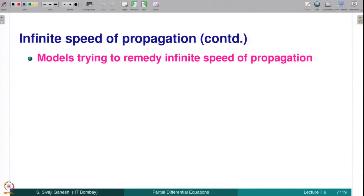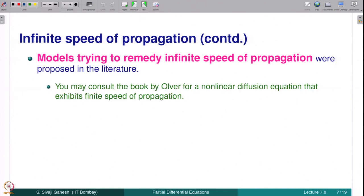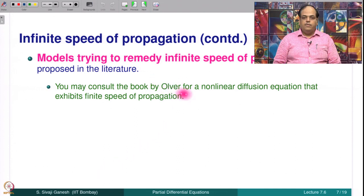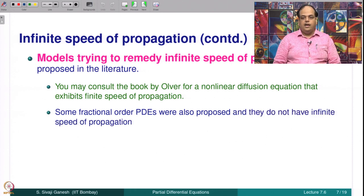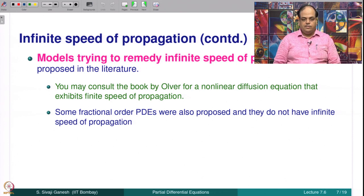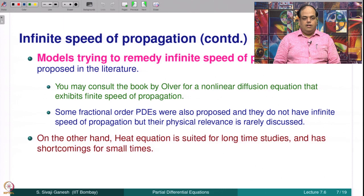Models have been created trying to remedy infinite speed of propagation — for example, a nonlinear diffusion equation that exhibits finite speed of propagation. There are also fractional order partial differential equations that do not have infinite speed of propagation, though their physical relevance is rarely discussed. On the other hand, the heat equation is suited for long-time studies for large T and has shortcomings only for small times.